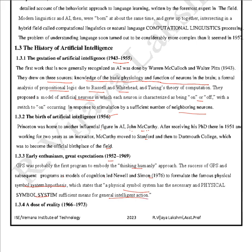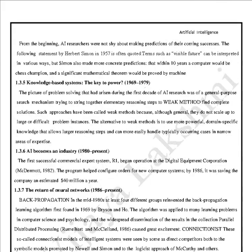Next, a dose of reality from 1966 to 1973. From the beginning, AI researchers were not shy about making predictions of their coming successes. Herbert Simon's statements are often quoted in terms of the 'visible future.' Simon made concrete predictions that within 10 years the computer would be chess champion and significant mathematical theorems would be proved by machine.